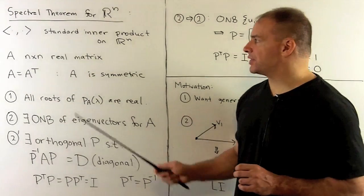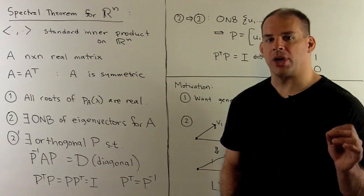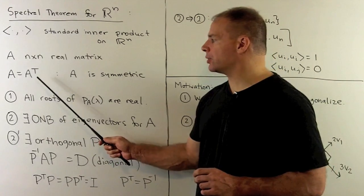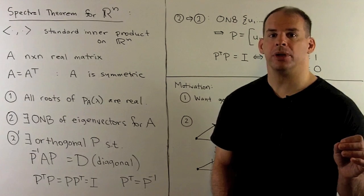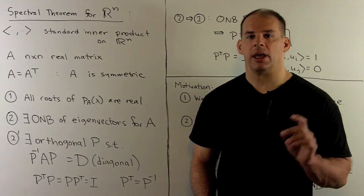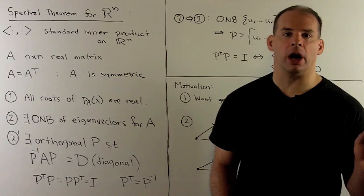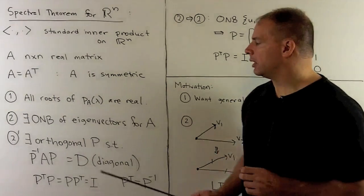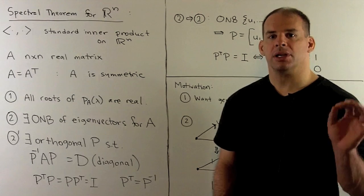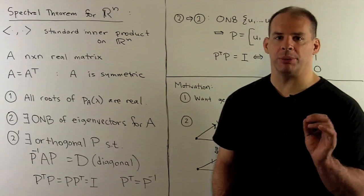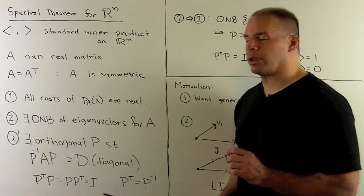We have the standard inner product on R^n. A is an n-by-n real matrix, and A is symmetric — A equals A transpose. Then all roots of the characteristic polynomial of A are real, so A has all real eigenvalues. And there exists an orthonormal basis of eigenvectors for A for R^n. This statement is equivalent to: there exists an orthogonal matrix P such that A is put in diagonal form using P — P inverse AP equals D, a real diagonal matrix.